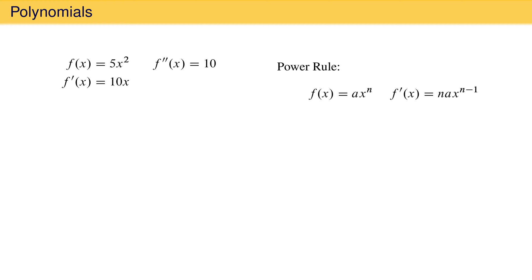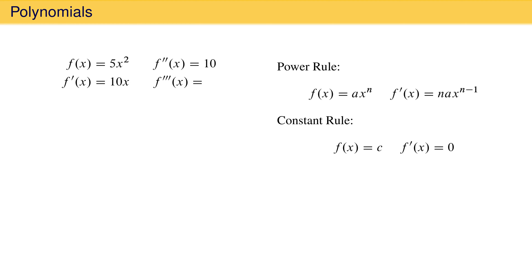But how do we take the derivative of this result to obtain the third derivative of the original function? Instead of the power rule, we use what is called the constant rule, which states that for any function that is equal to a constant c, the first derivative is always 0. This makes sense because a function equal to a constant is a horizontal line, and any horizontal line has a slope of 0 at every point, making the derivative 0 at every x coordinate. The derivative of 10, and the third derivative of 5x squared, is therefore 0.